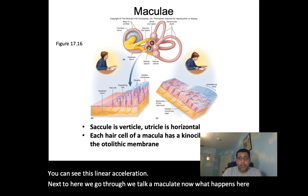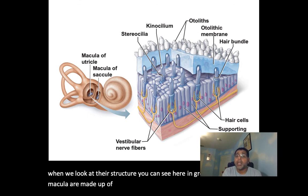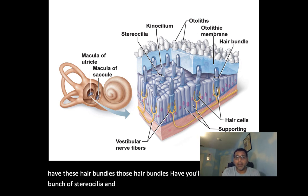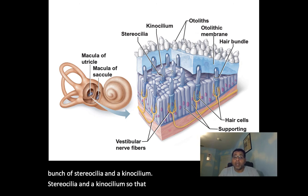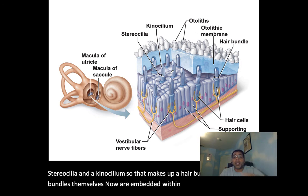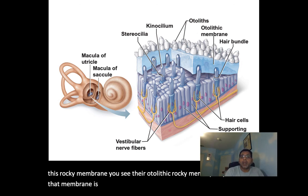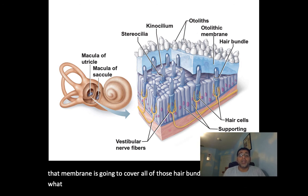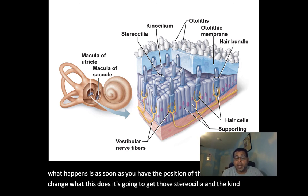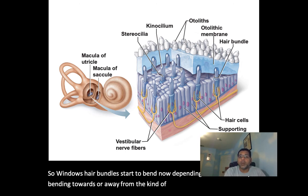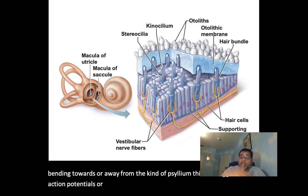Looking at the structure of the maculae, they're made up of supporting cells and hair cells. The hair bundles have stereocilia and a kinocilium, and are embedded within the otolithic membrane. When the position of the head changes, this gets the stereocilia and kinocilium to bend. Depending on whether they bend toward or away from the kinocilium, this triggers action potentials along the nerves, letting the brain know what's happening.